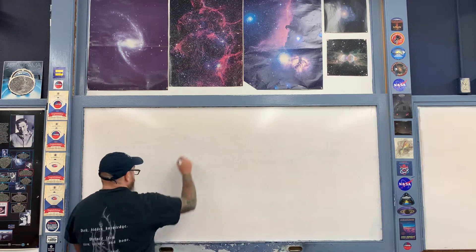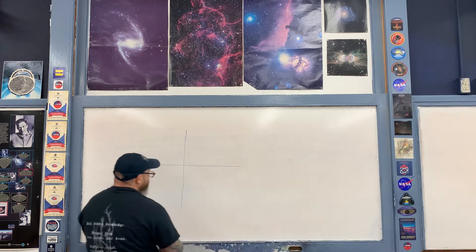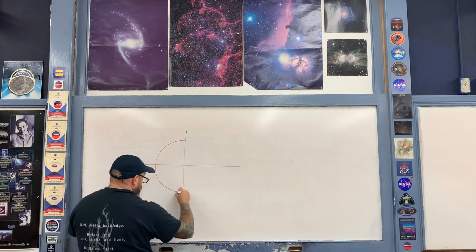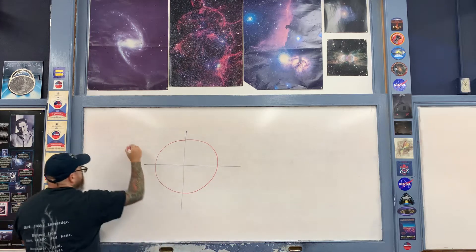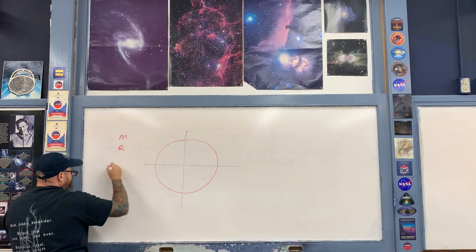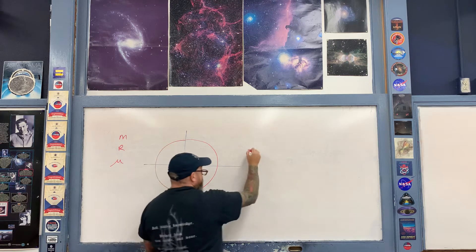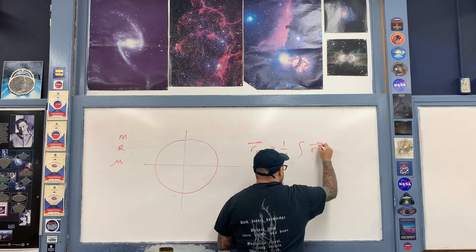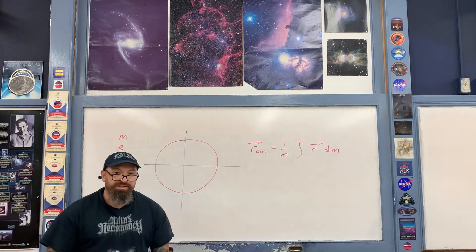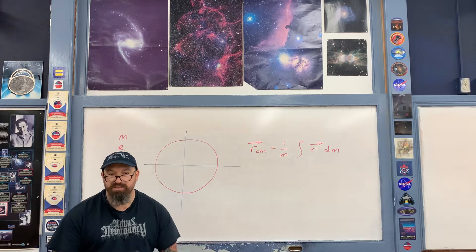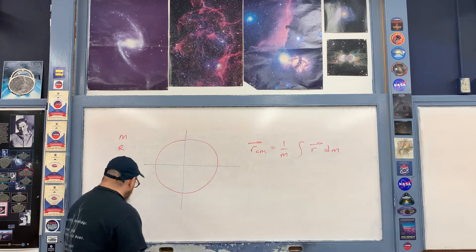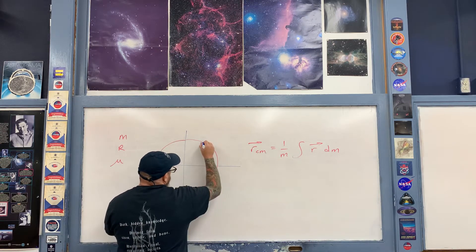So the circle has a mass M, radius capital R, and a linear density μ associated with it. When building this integral, it involves two things: the infinitesimal amount of mass dm, and the position vector r. The little dm has a length associated with it — this is an arc length on the circle, referred to as ds. The position vector r goes from the origin to this little dm.